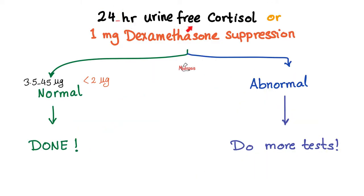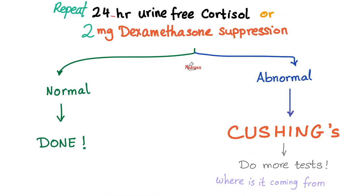First, start with 24-hour urine-free cortisol. Ask the patient to collect every single drop of urine throughout an entire 24-hour period. We expect about 1–2 liters of urine. If the cortisol level is normal and not elevated, the patient probably does not have Cushing. But if it's abnormal, order more tests. You can repeat the 24-hour urine-free cortisol, or use a higher dose — instead of 1 mg, use the 2 mg dexamethasone suppression test. If normal, probably no Cushing; if abnormal, she does have Cushing.